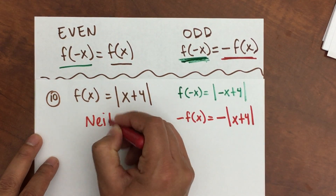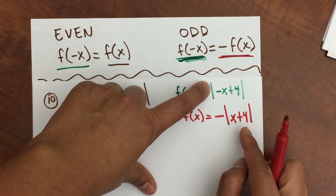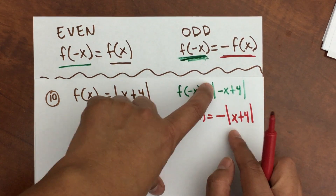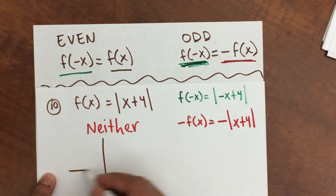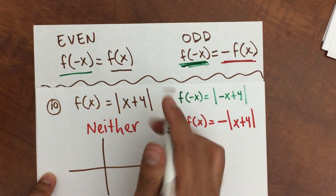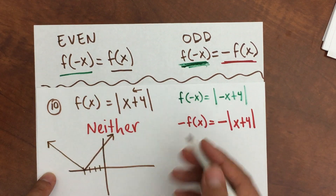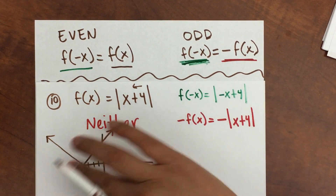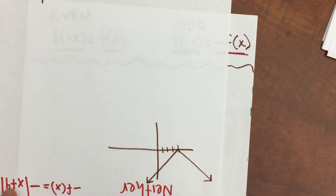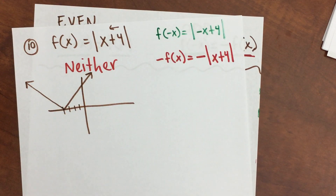So we're going to say neither — neither even nor odd. For a function to be even, f of negative x has to equal f of x. For a function to be odd, f of negative x has to equal negative f of x, and they're not the same here. If you look at the graph — the absolute value of x plus 4 shifts four spaces to the left. If you fold it along the y-axis, you don't get a match. And if you rotate it 180 degrees, you don't get the same graph as the original. That's why it's neither even nor odd.